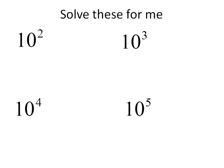We have here 10 to the power of 2. And remember, when we raise something to a power, what it means is we're multiplying our base number — in this case 10 — times itself that many times. So this is 10 times 10, which is 100. This one over here would be 10 times 10 times 10 — we're multiplying the base times itself three times.